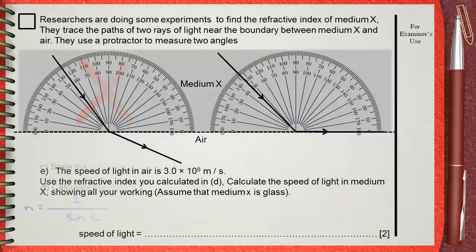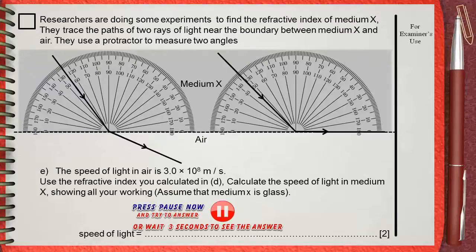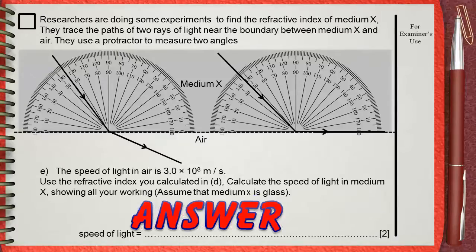Next question, E. The speed of light in air is 3 times 10 power 8 meter per second. Use the refractive index you calculated in D to calculate the speed of light in medium X, showing all your working.